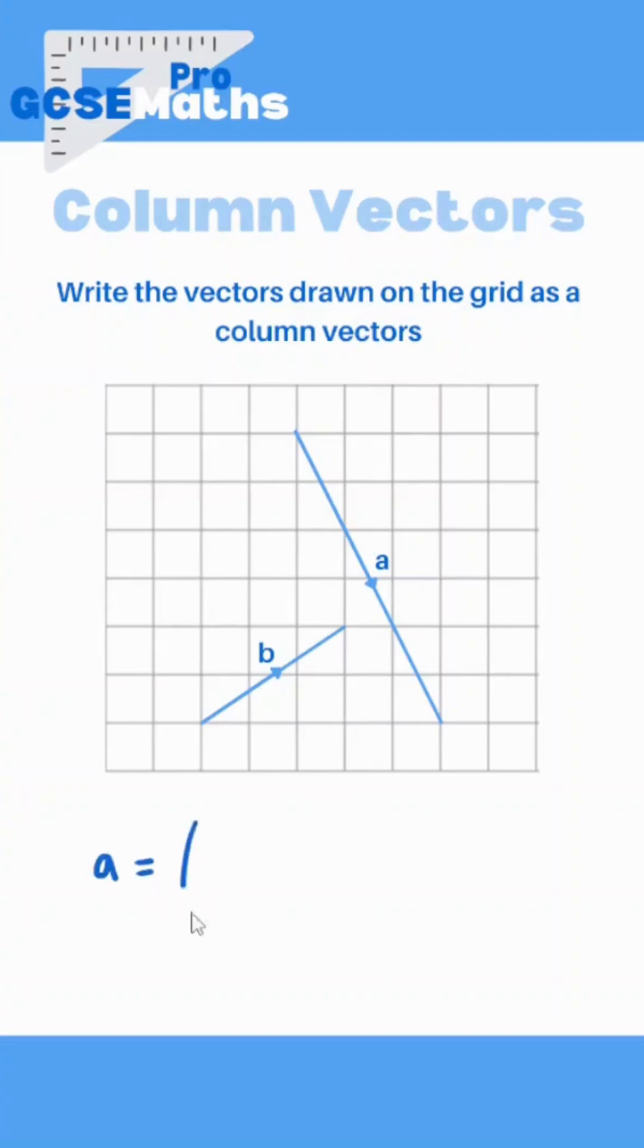So A, we'll start with. A is, and then we have these two brackets with enough room to write two numbers on top of each other. The top number, if you remember, is the direction left or right.